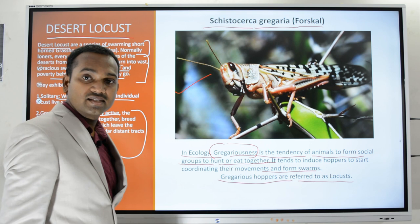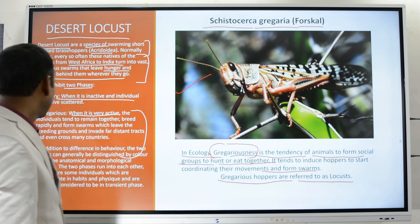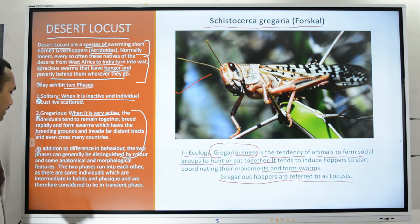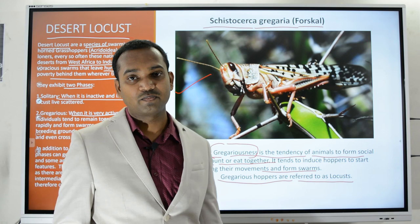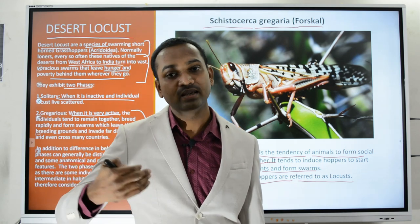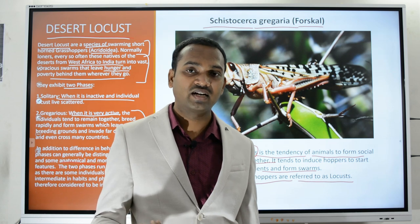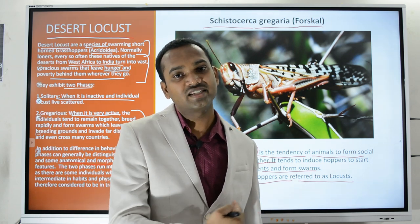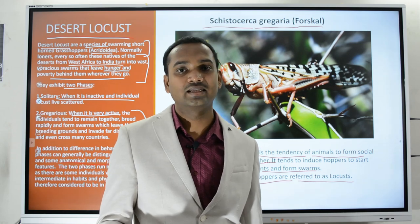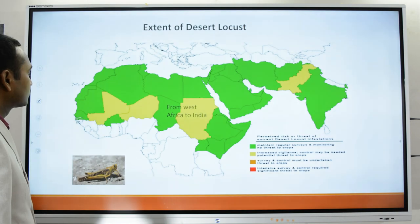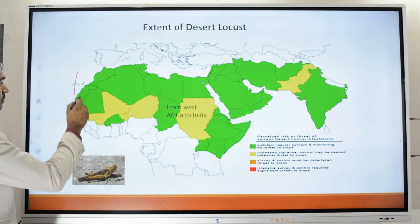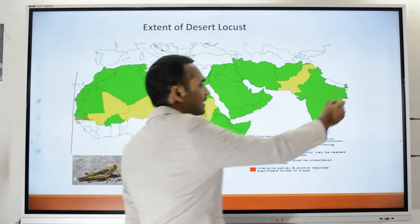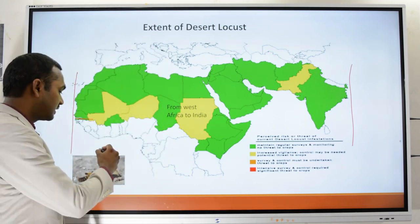The two phases of the desert locust can generally be distinguished by anatomical and morphological features. The solitary locust is physically different from the gregarious locust. The extent of the desert locust spreads all the way from Western Africa to India. In its solitary phase the desert locust appears somewhat greenish, but in the gregarious phase a reddish hue is present.